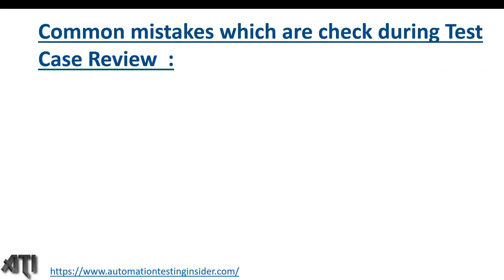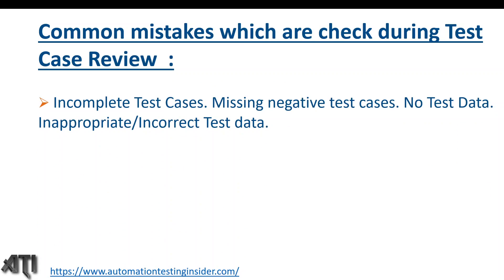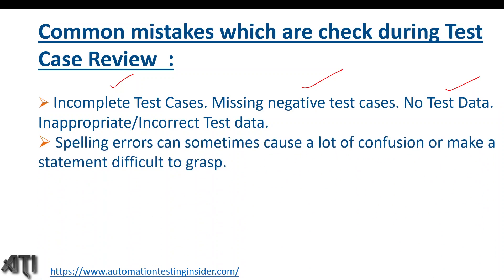Now, what are the common mistakes checked during the test case review process? These include: incomplete test cases, missing negative test cases, missing or inappropriate or incorrect test data. Spelling errors are also checked, as they can sometimes cause a lot of confusion or make a statement difficult to understand during the review process.